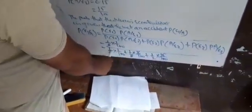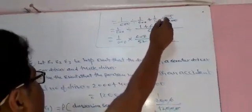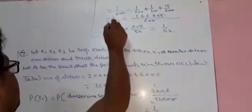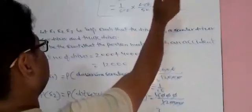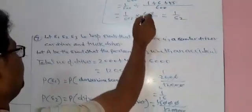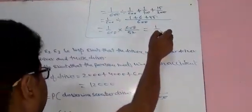Substituting: [(1/6) × (1/100)] / [(1/6 × 1/100) + (1/3 × 3/100) + (1/2 × 15/200)] = (1/600) / [(1/600) + (1/100) + (15/200)] = (1/600) / [(1 + 6 + 45)/600] = (1/600) × (600/52) = 1/52.